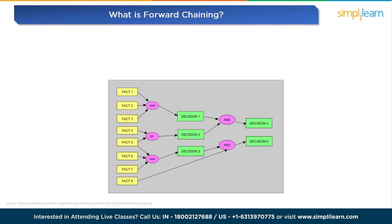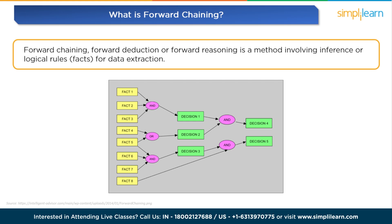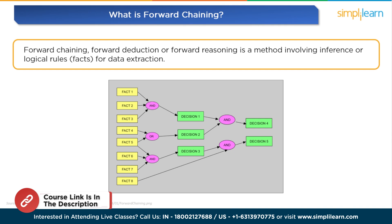Let's move to forward chaining. Forward chaining — also called forward deduction or forward reasoning — is a method involving inference or logical rules and facts for data extraction. It is a bottom-up approach performed iteratively to reach the endpoint or goals. It begins with evaluating existing information followed by manipulation based on the knowledge base. Existing information can include facts, derivations, and conditions.